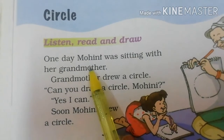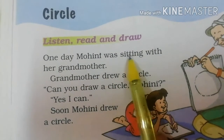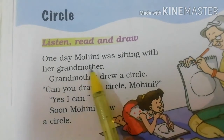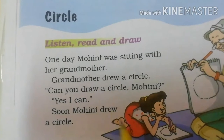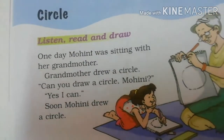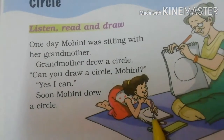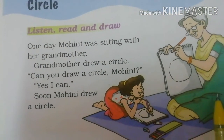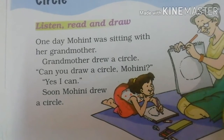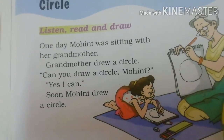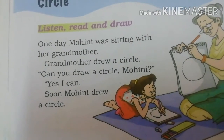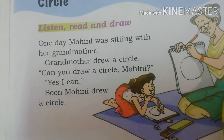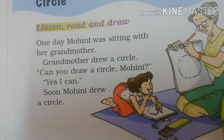One day Mohini was sitting with her grandmother. Ek din Mohini jo hai, woh kiske saath baithi thi? Apni grandmother ke saath. Grandmother means dadi bhi hota hai, nani bhi hota hai. Toh woh apni grandmother ke saath baithi thi.